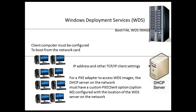The point here is that the bare metal computer — the computer that does not have an operating system — cannot see the WDS server unless option 60 is configured. And again, option 60 shows the client the location of the WDS server on the network.